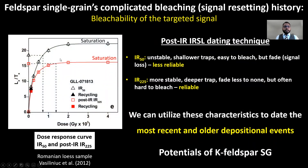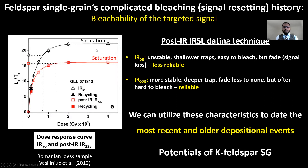This is a dose-response curve from Vaselini et al., where normalized luminescence signals are plotted for 50 degrees centigrade in black and 225 degrees centigrade in red. Since we are mostly interested in potassium feldspar, we stimulate samples using infrared, and the method is called post-infrared infrared-stimulated luminescence dating. The low-temperature IR50 signals are relatively brighter but come mostly from shallower, unstable traps — they are easy to bleach but fade over time, making them less reliable. In contrast, higher-temperature IR225 signals are more reliable but often hard to bleach.